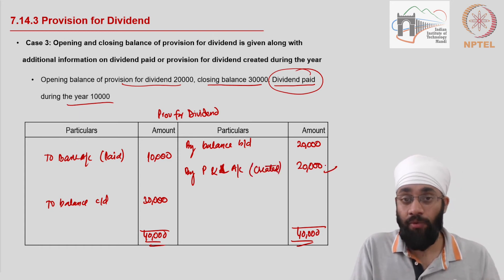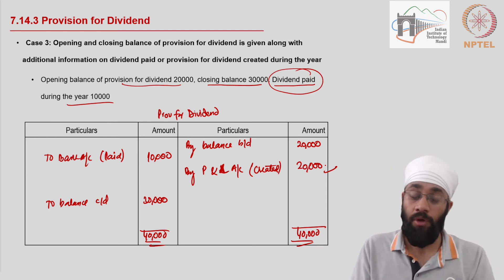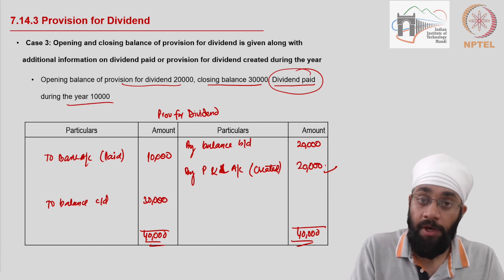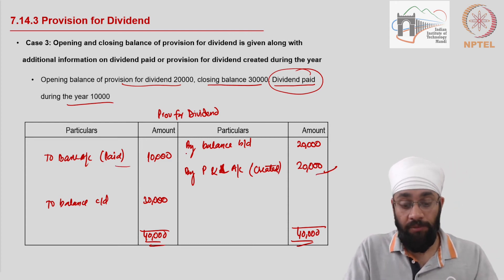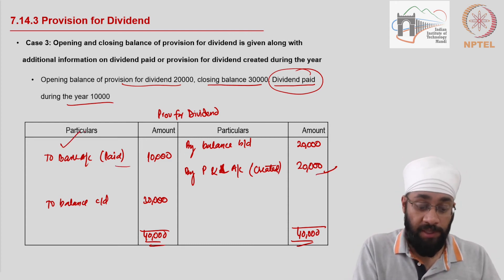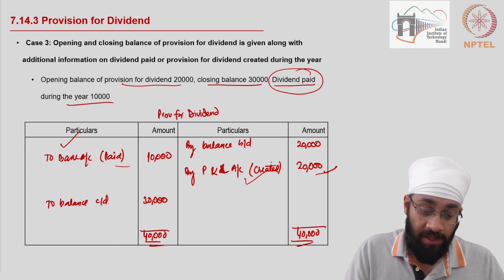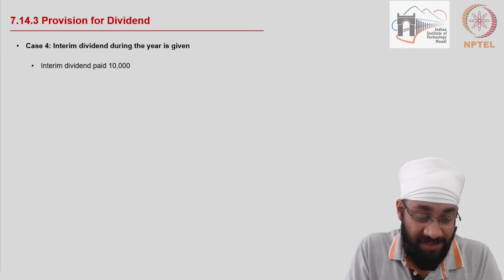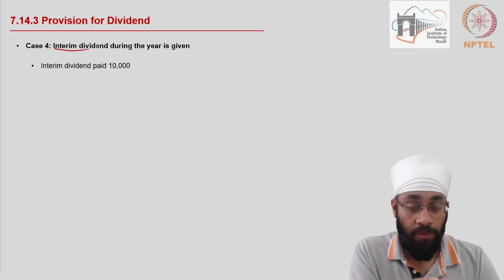That balancing figure of 20,000 is the provision created — taken out of the profit and loss account and put into the provision for dividend account. Similar to the provision for taxes account, we look at and figure out the hidden information. It's a zero-sum game: if you have one number, you can calculate the other, and vice versa.